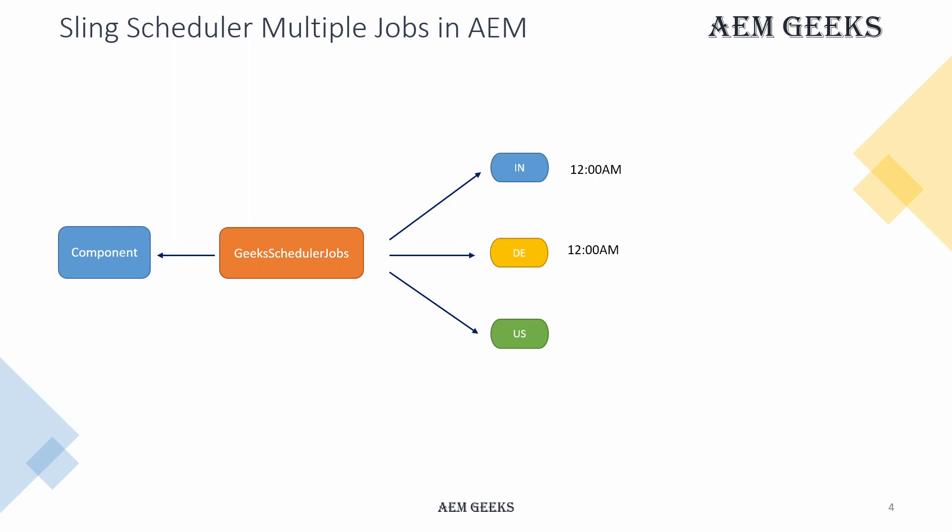I'm running three country sites — India, Germany, and US. This scheduler should execute at midnight for each country and fetch COVID patient data. My server is in India, so for India scheduling at 12 o'clock is fine. The problem is Germany and US: converting their midnight to IST gives 4:30 AM and 1:30 PM. So the scheduler should execute at 12 AM, 4:30 AM, and 1:30 PM.